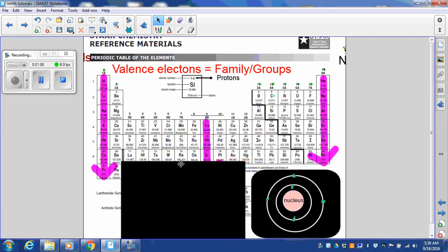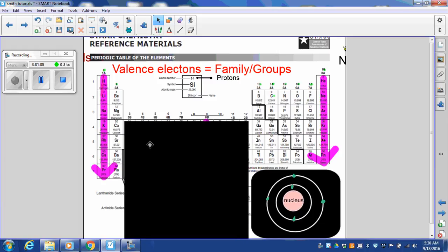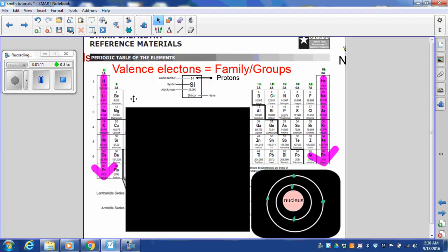I'm going to skip these transition elements today. We'll get those later. Family group 2, 2 valence electrons. 1, 1 valence electron.